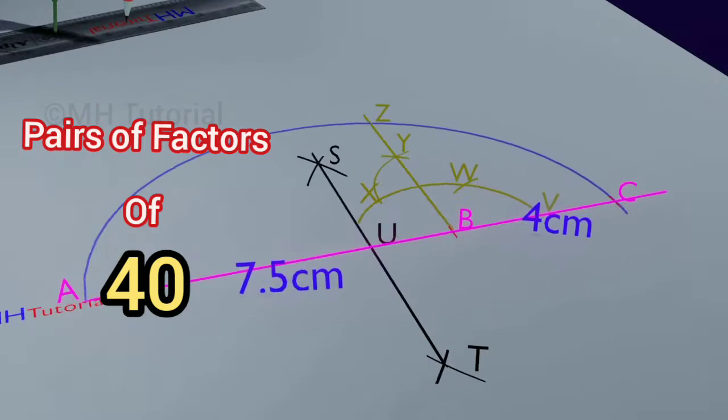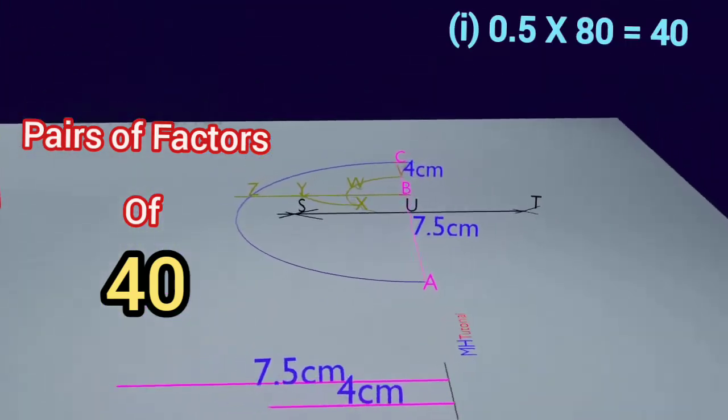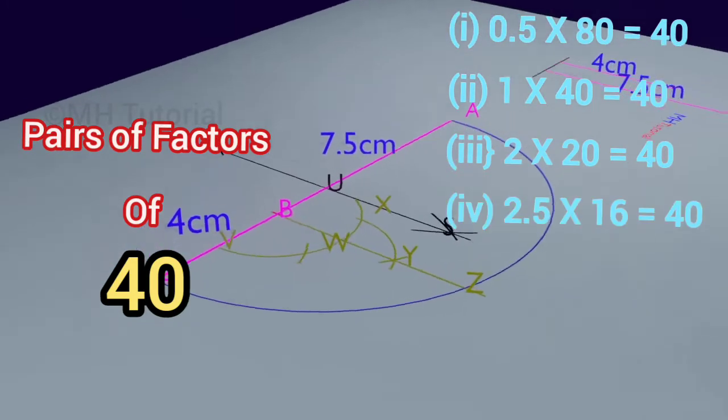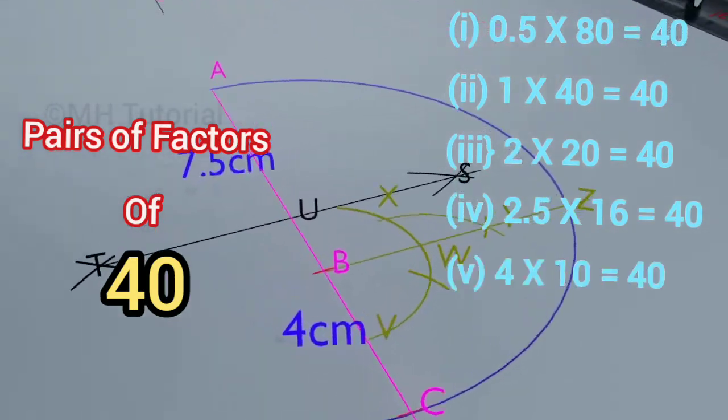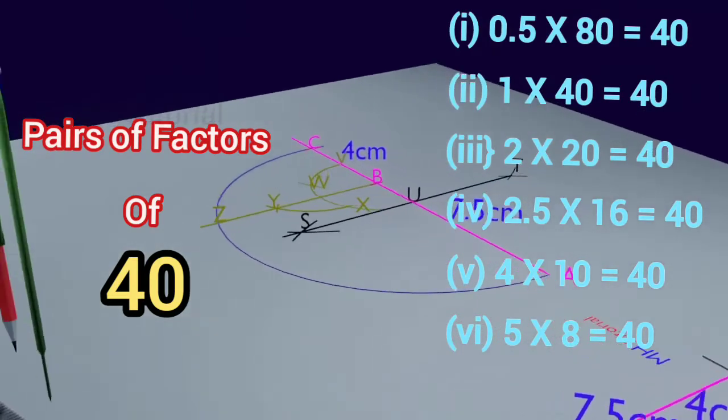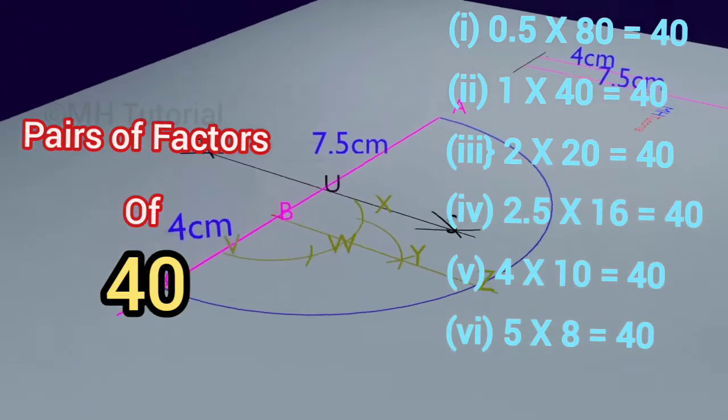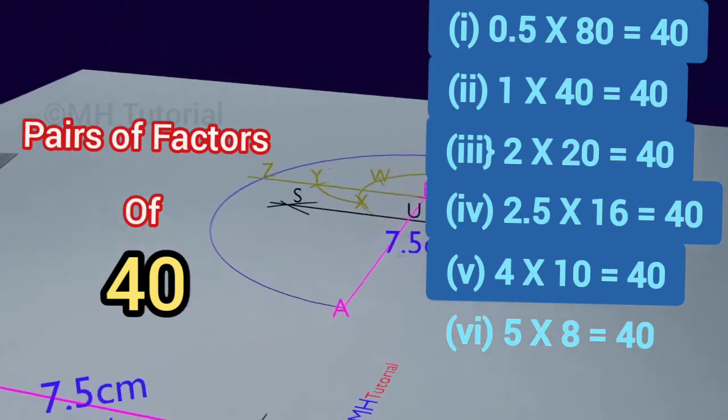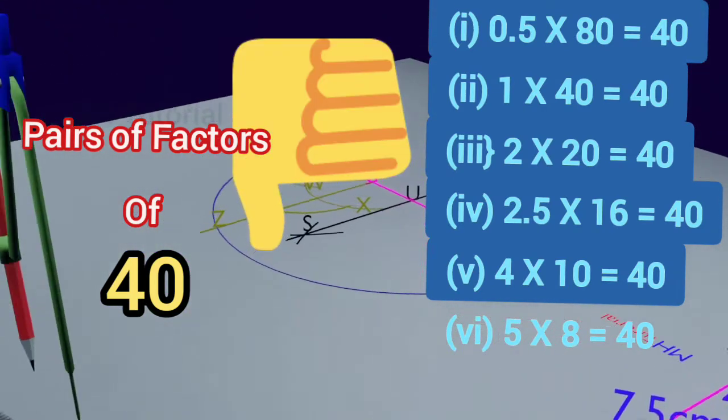For example, many pairs of factors exist for the number 40. They may be 0.5 and 80, 1 and 40, 2 and 20, 2.5 and 16, 4 and 10, 5 and 8, and so on. Any one among these pairs can be chosen for this calculation, but the higher the difference between the factors, the higher amount of errors occurred in the values of the calculated square root.